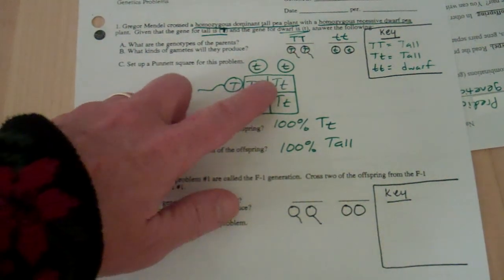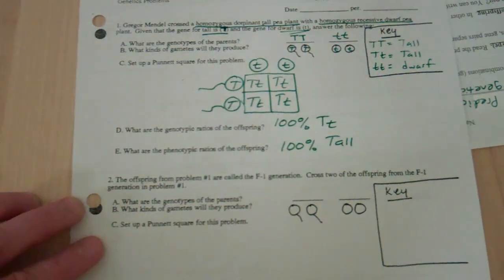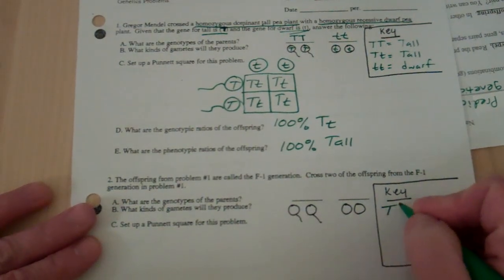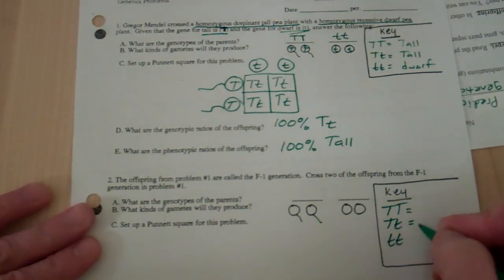That's what I need to do for problem two: take two of these offspring and cross them. Notice that they're all heterozygous, it doesn't matter which two I pick. So my key again: big, big, big, little, little, little. Do that like clockwork.